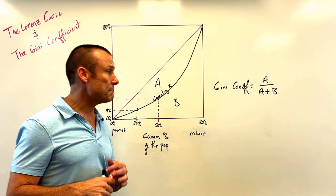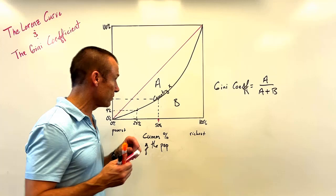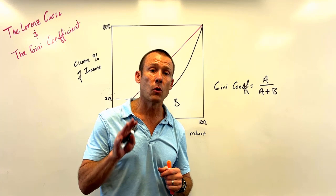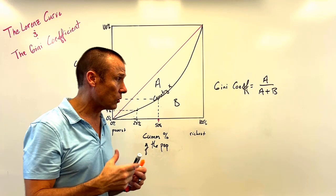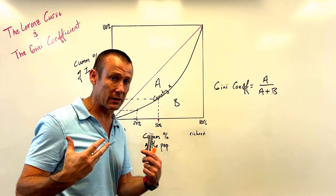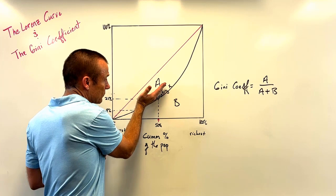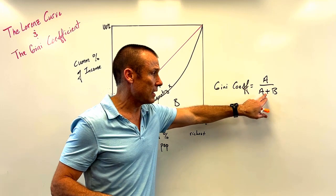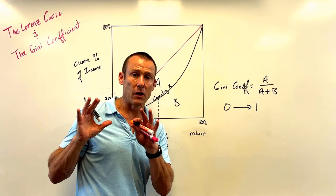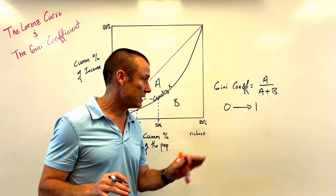What does this mean? As the Gini coefficient gets larger — as the Lorenz curve bows out more — area A gets bigger, meaning more inequality. The higher the Gini coefficient, the more inequality. At maximum inequality, A fills the entire area and the coefficient equals 1, meaning all income goes to one person. At perfect equality, the Lorenz curve follows the reference line, A goes to zero, and the coefficient equals 0. So Gini coefficients range between 0 and 1.